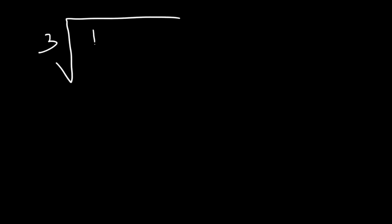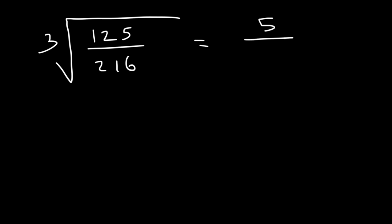Now what is the cube root of 125 over 216? The cube root of 125 is 5, because 5 to the third is 125. And the cube root of 216 is 6, because if you multiply 6 three times, you're going to get 216.